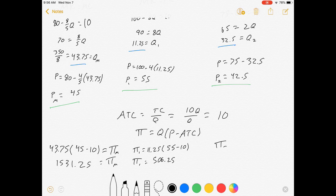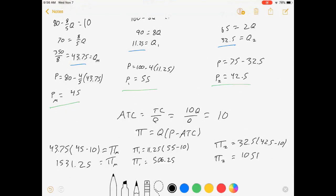And our profit for segment two is equal to 32.5 times 42.5 minus 10. So profit for segment two is equal to 1056.5.